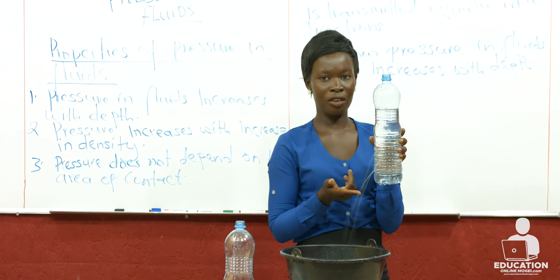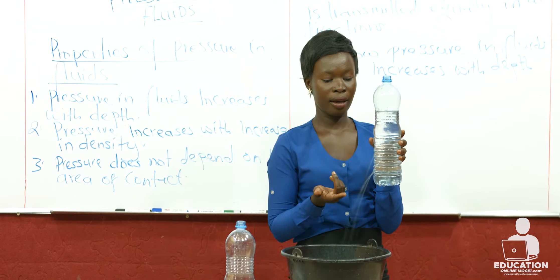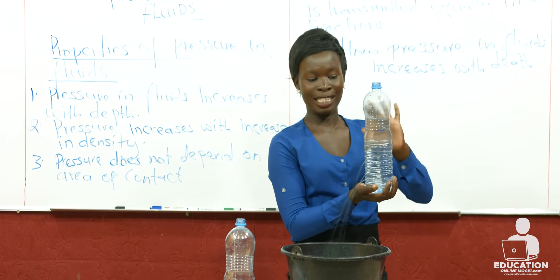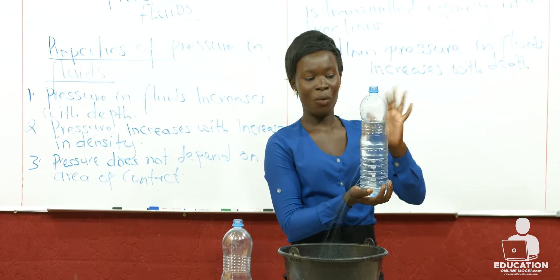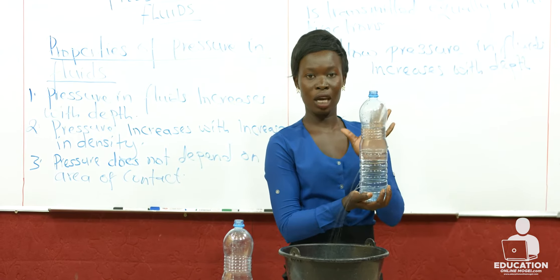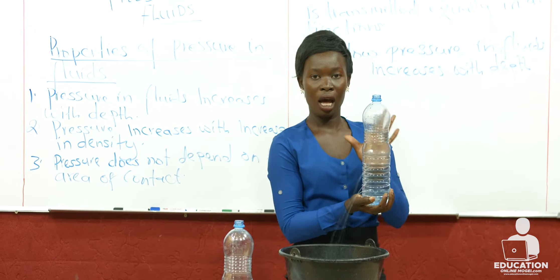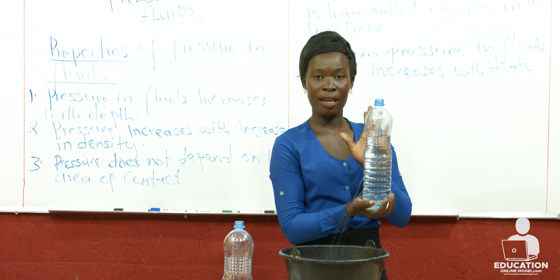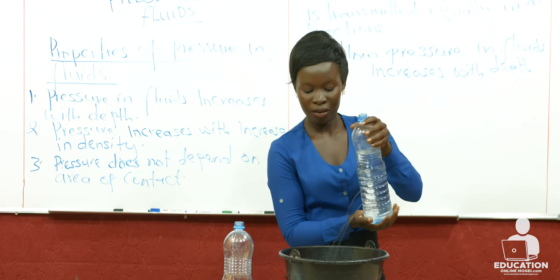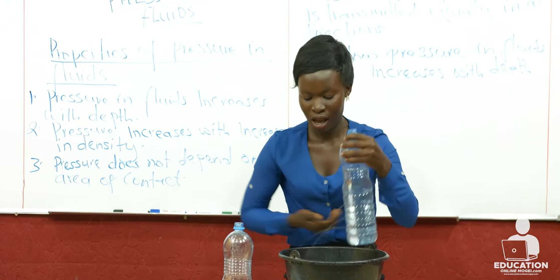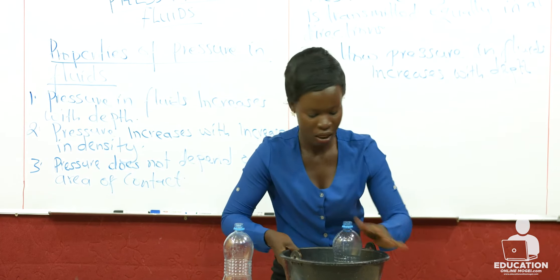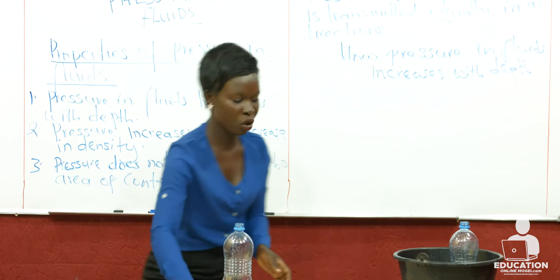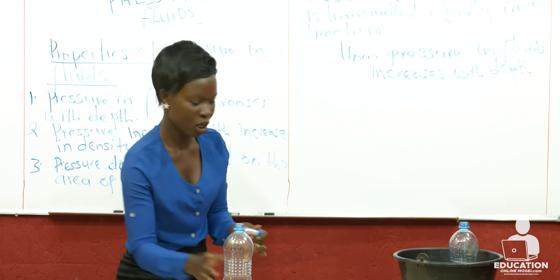This is because as you pour the liquid, to get pressure it is force over area. If you check, the force is the same as the weight, and weight is mass times the acceleration due to gravity. As you pour your water, all the weight you add comes to the bottom. So the whole weight of the liquid is felt more at the bottom, which is why the jet from the bottom hole is farthest from the bottle.